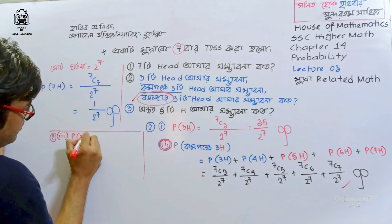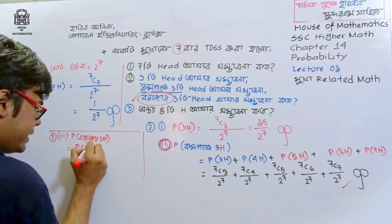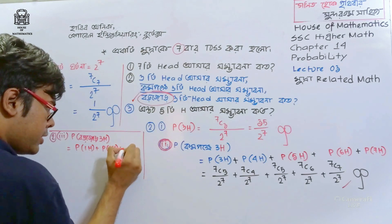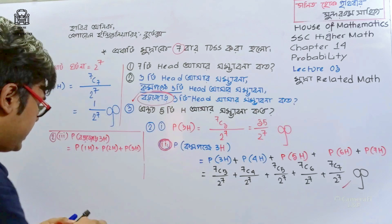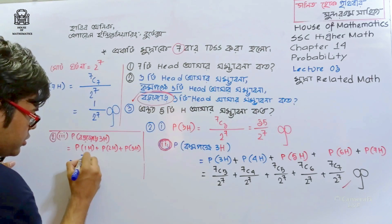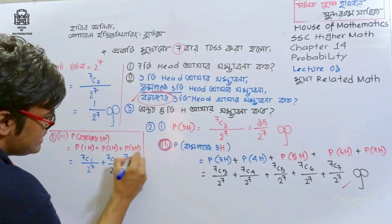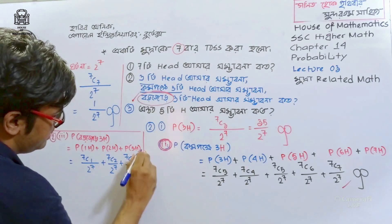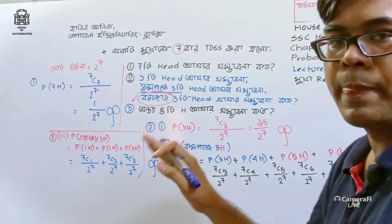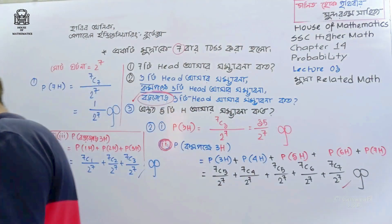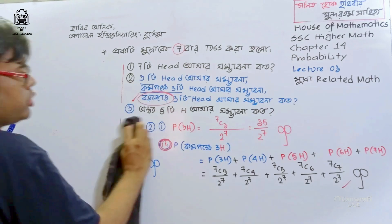We are going to calculate P(3H), P(2H), P(1H) using 7C1, 7C2, 7C3 divided by 2 to the power 7. This is how we are going to work through these combination problems. Last question.